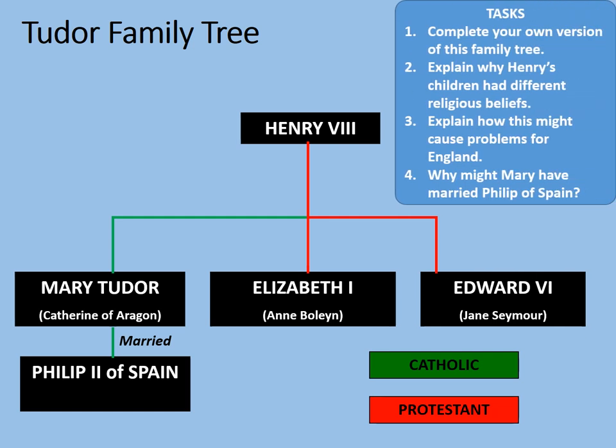Here are some tasks. First, complete your own version of this family tree, colour-coding the lines to show Catholics or Protestants. Second, explain why Henry's children had different religious beliefs — think about what Henry did to the church during his reign. Third, explain how this might cause problems for England. And fourth, why might Mary have married Philip of Spain? Pause the video while you complete those tasks, then press play when you're ready to continue.